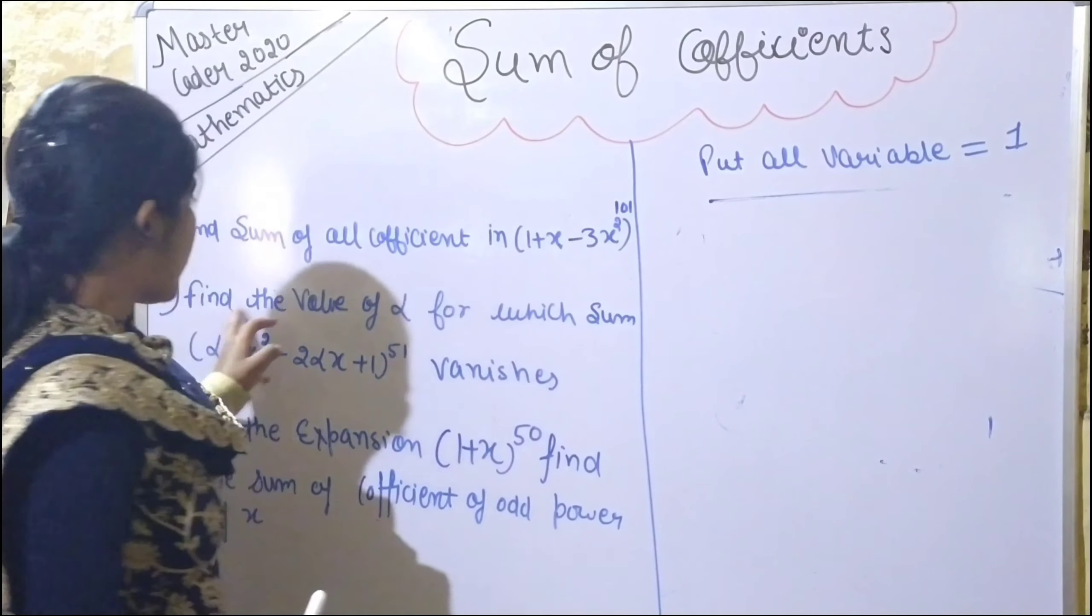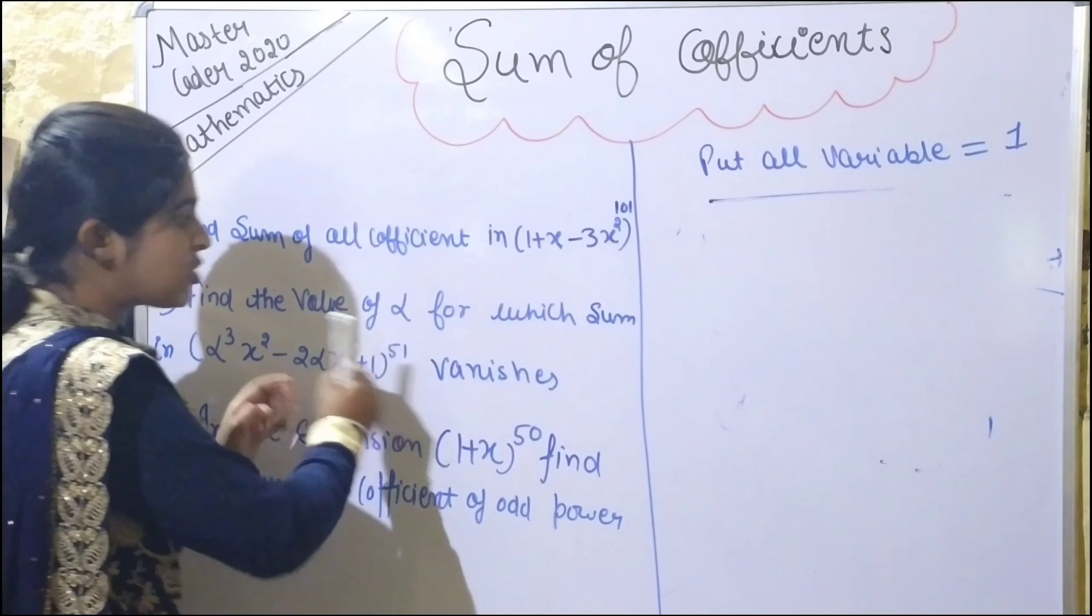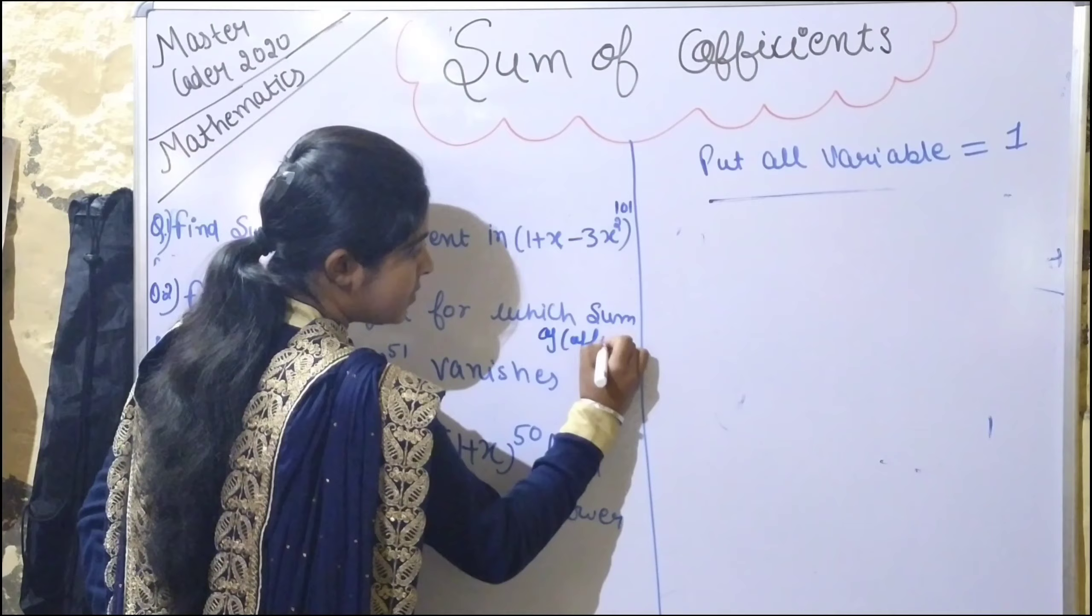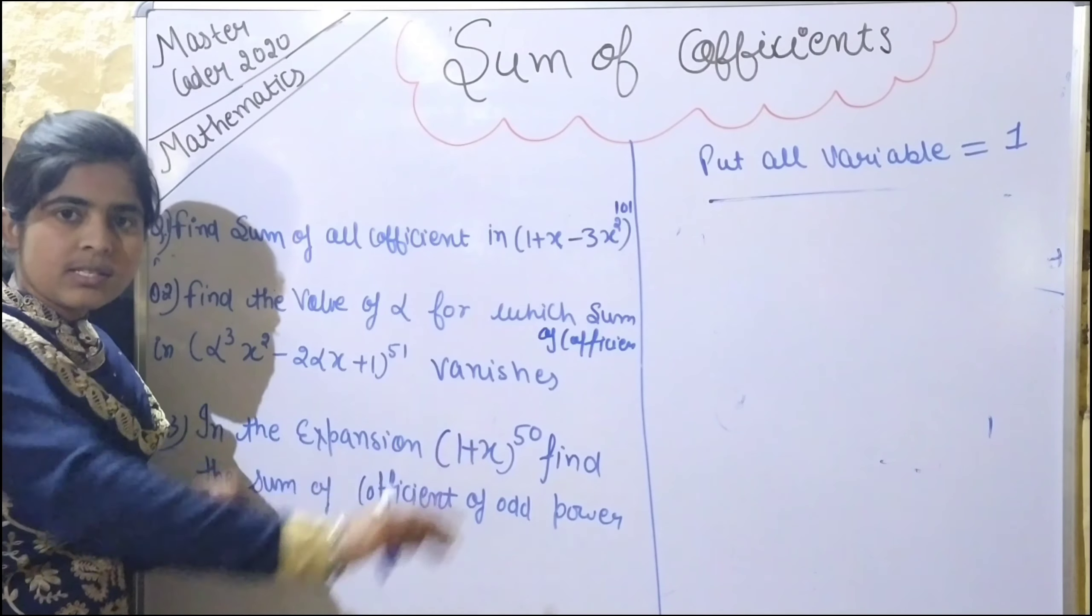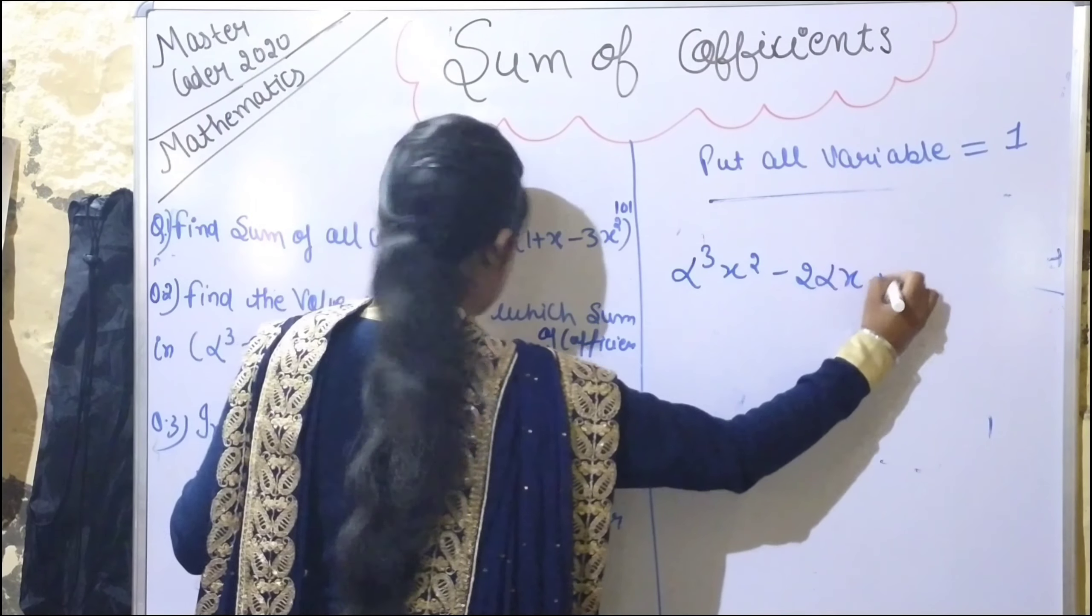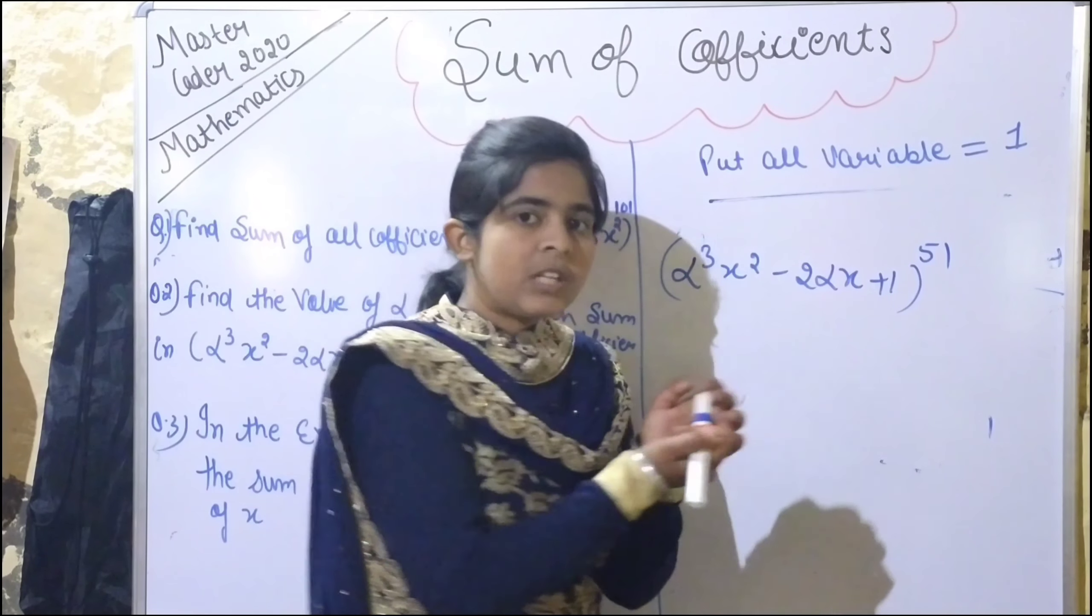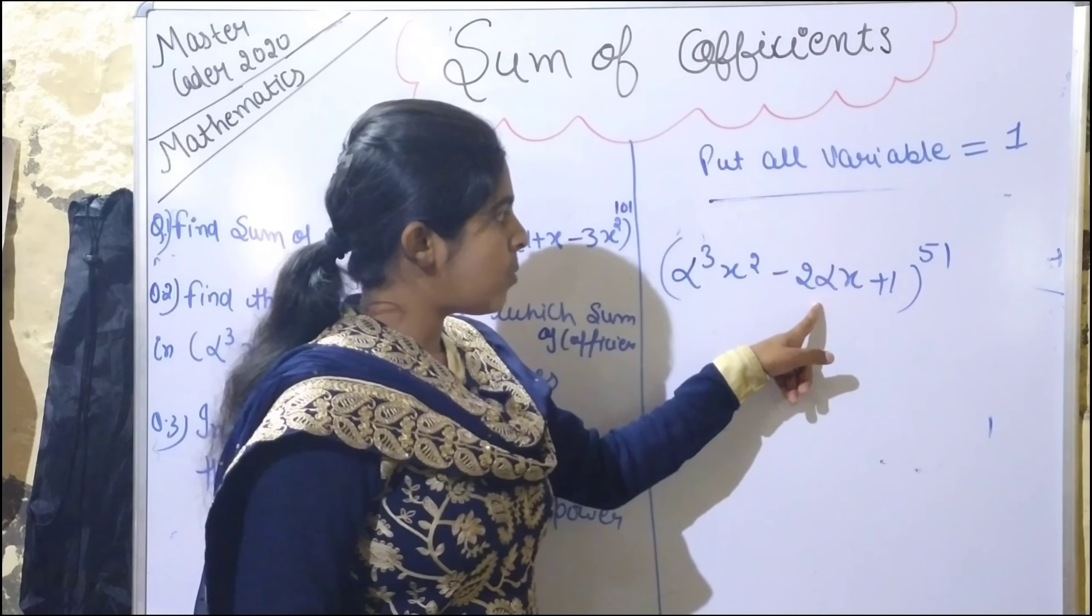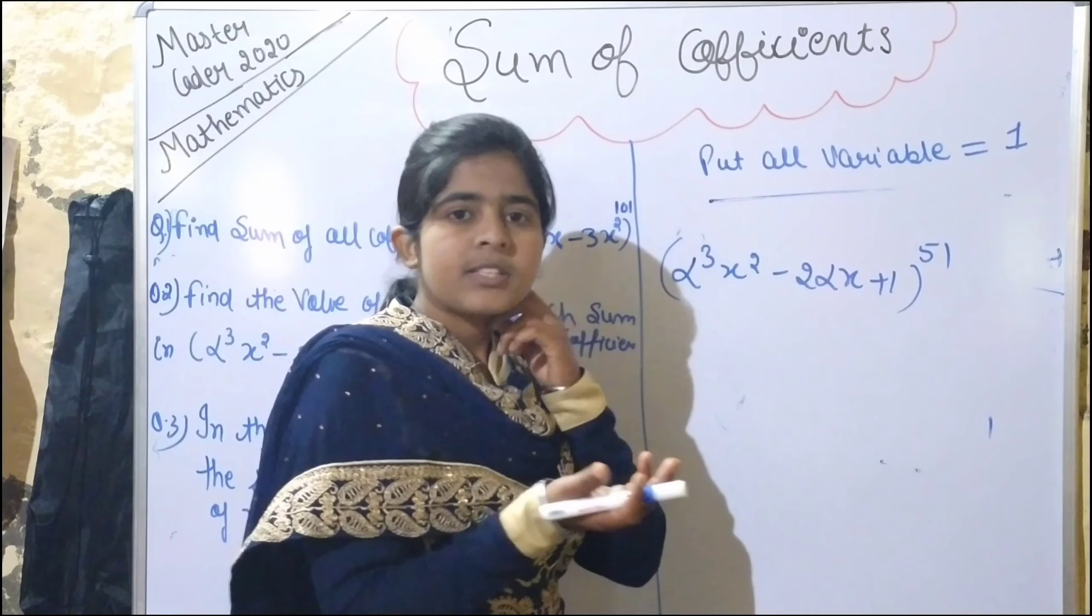Find the value of alpha for which the sum in this expansion vanishes. That means find the value of alpha such that the sum of coefficients becomes zero. The expansion is (alpha x² - 2alpha x + 1)^51. We need to find what value of alpha makes the sum zero. We know to find sum of coefficients, we put the variable equal to one.